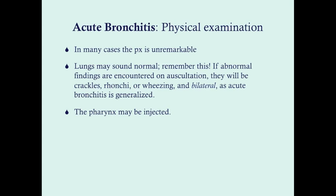On physical examination, findings are most often unremarkable. We don't see as much wheezing with acute bronchitis as we do in bronchiolitis, and the lungs can sound completely normal — so a normal auscultation does not rule out acute bronchitis. If abnormal findings are present, they're typically crackles or rhonchi, possibly wheezing, and they'll always be bilateral because acute bronchitis is generalized, in contrast to foreign body aspiration, which can be unilateral.